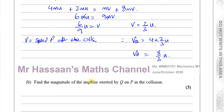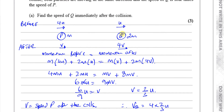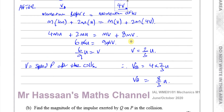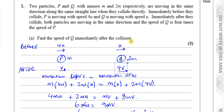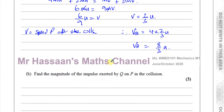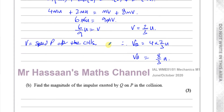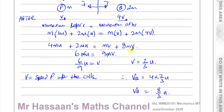Part B says: find the magnitude of the impulse exerted by Q on P. When they collide, they both exert an impulse on each other which is equal and opposite. So the impulse exerted by Q on P is equal in magnitude to the impulse exerted by P on Q. If you find one of them, you find both of them — they have the same magnitude, just opposite directions. So it doesn't really matter which particle you choose.